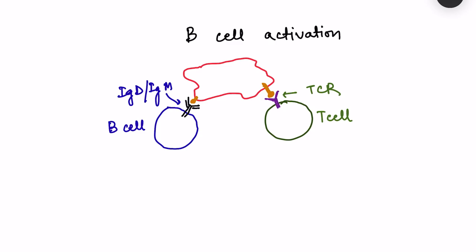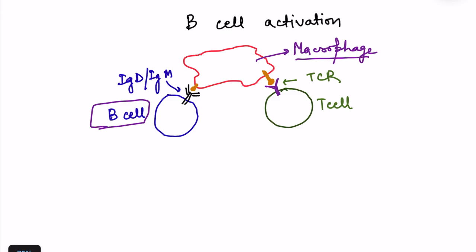The antigen presenting cell — say a macrophage — processes the antigen and presents it to the B cell. By the way, B cells are also antigen presenting cells, but here we are focusing on B cell activation. The macrophage presents the antigen to the B cell via its receptor, immunoglobulin D or immunoglobulin M, and also presents the same antigen to a helper T cell.